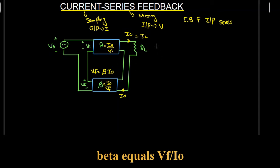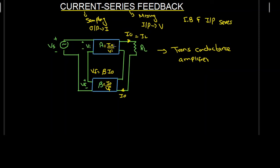This current series feedback amplifier is also called a transconductance amplifier, because here A is equal to I0 divided by VI. This is the reciprocal of resistance, which is conductance, and that is why it is called the transconductance amplifier. If we express I0 in terms of A, then I0 will be equal to A times VI. This was about the current series feedback amplifier, also called the transconductance amplifier.